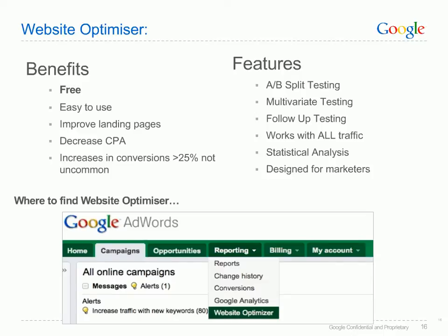There are even more benefits and key features when using Google's Website Optimizer. Benefits include that it's free, it's easy to use, and it improves landing pages. Key features include A/B split testing, multivariate testing, follow-up testing, it works with all traffic, and it's designed for marketers. You can access Google's Website Optimizer from directly within your AdWords account on the Reporting tab.